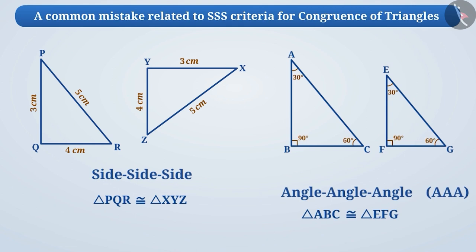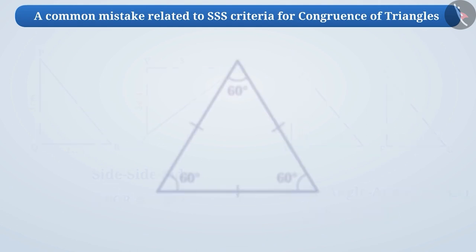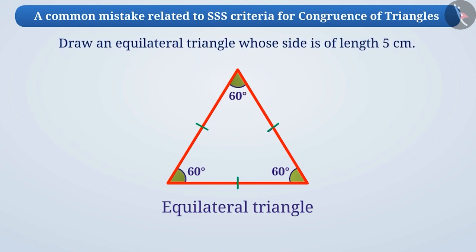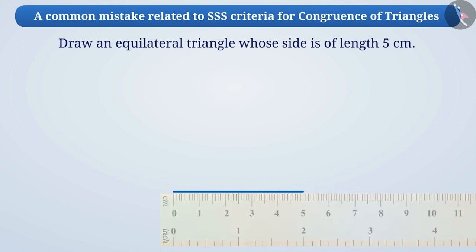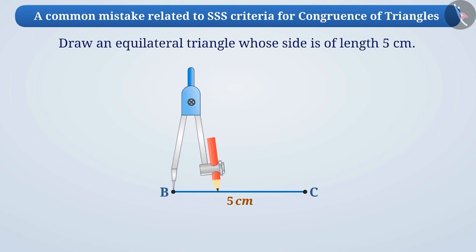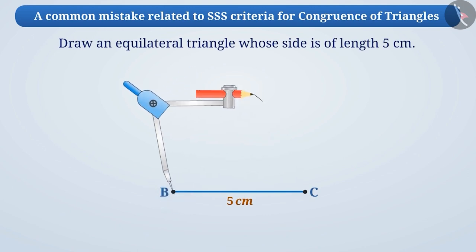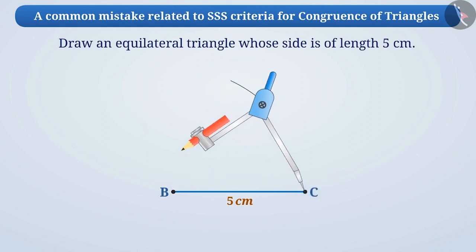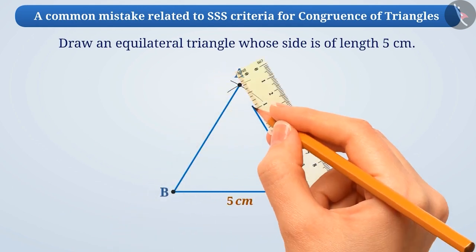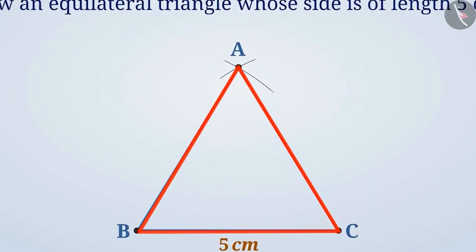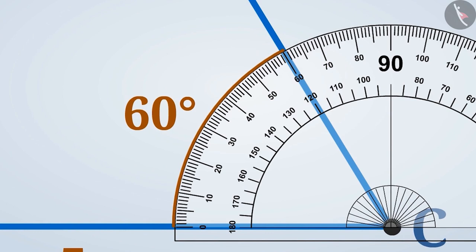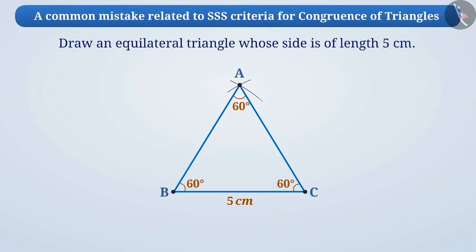Let us discuss whether this understanding is right or wrong. You know that all sides of an equilateral triangle are equal and each angle measures 60 degrees. We will draw a line segment BC of length 5 cm, then using the same length in the compass, draw an arc from B. Keeping the same length, we make another arc cutting the first arc from C. A is the point of intersection of the arcs, and joining points A to B and C, we obtain triangle ABC. If we measure its angles with a protractor, we will find all angles are 60 degrees.